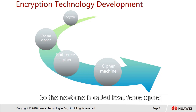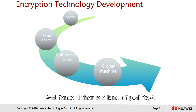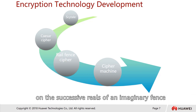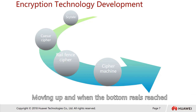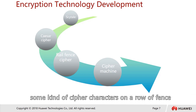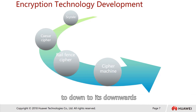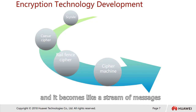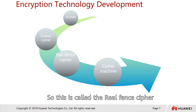The next one is called the Rail Fence Cipher. The plain text is written downwards diagonally on the successive rails of an imaginary fence, then moving up when the bottom rail is reached. Imagine writing cipher characters on a row of fences — you write diagonally downward, then go back up, and the message becomes a stream of characters. This is called the Rail Fence Cipher.